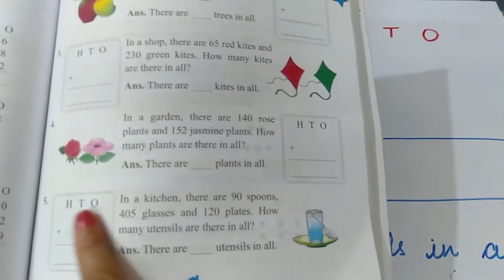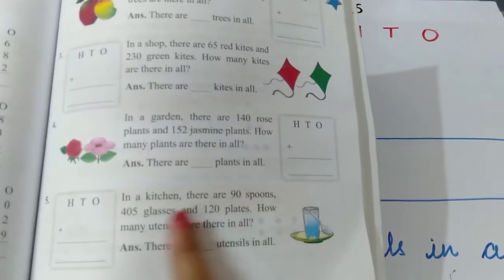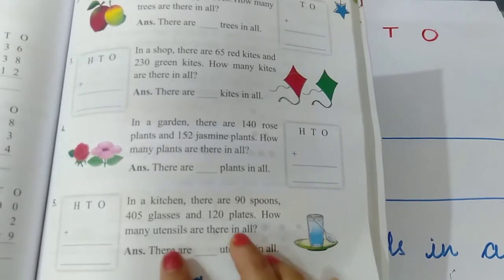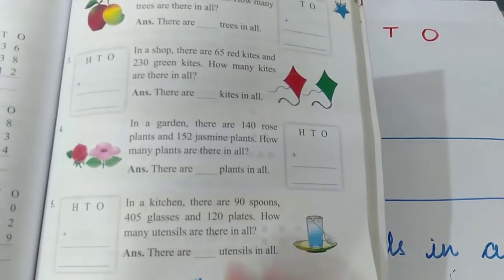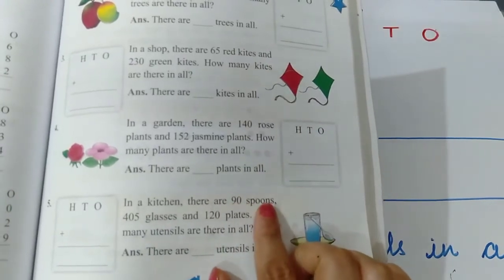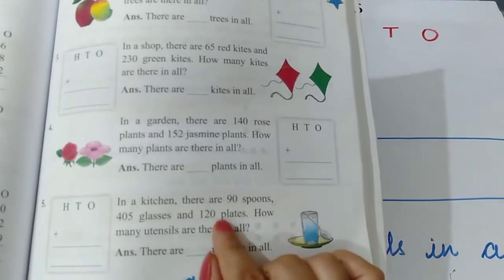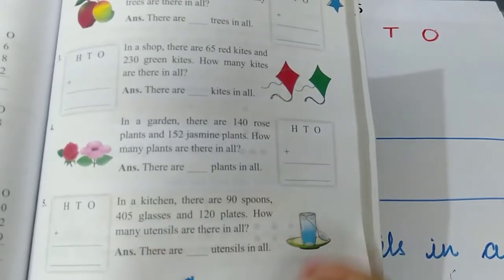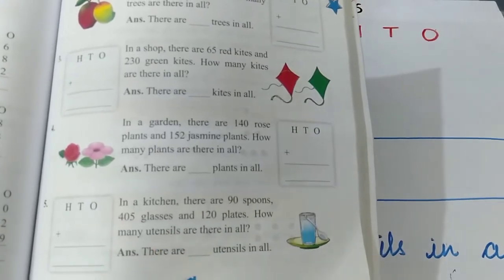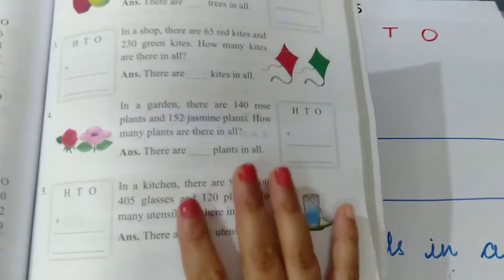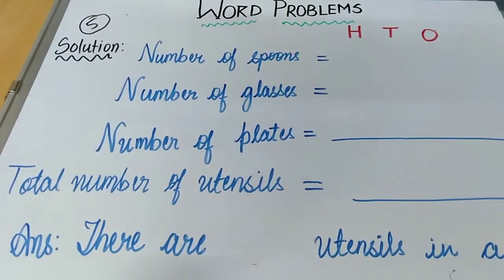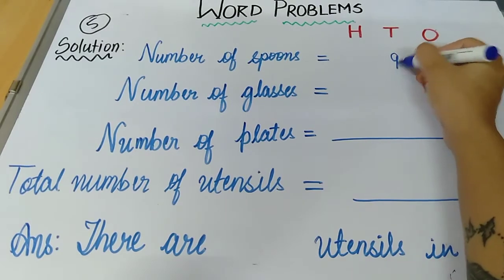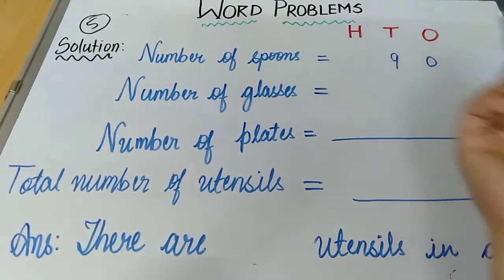Question number five: in a kitchen there are 90 spoons, 405 glasses, and 120 plates. How many utensils are there in all? This is a word problem. Number of spoons is 90, glasses is 405, and plates is 120. We have to find the total number of utensils — 'utensils' means 'bartan' in Hindi. Now, 90 is a two-digit number so the hundreds place will be empty.